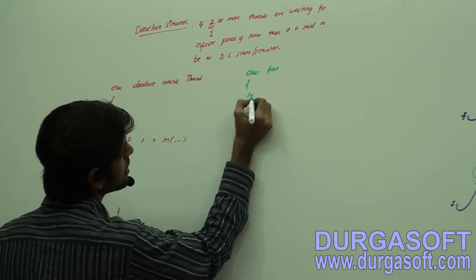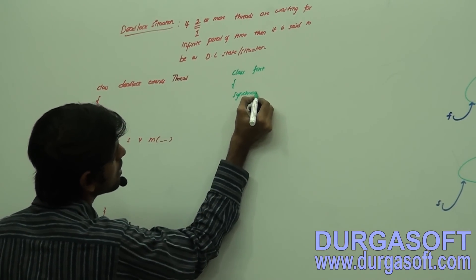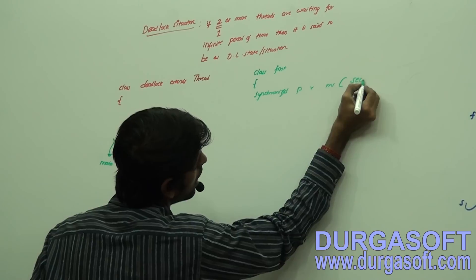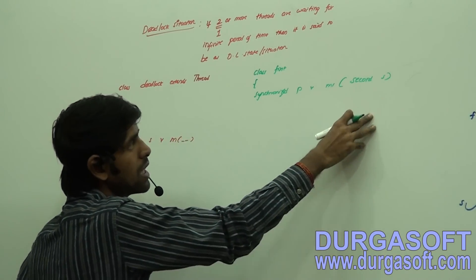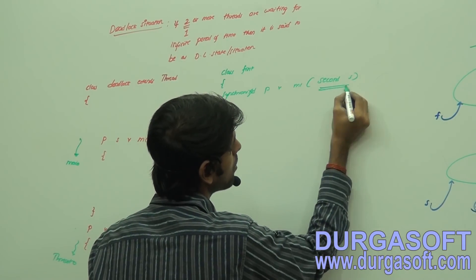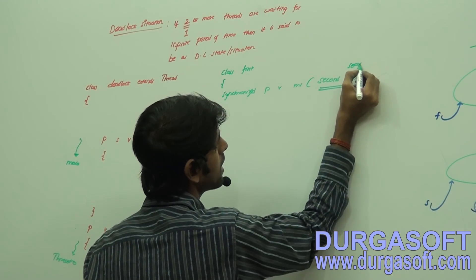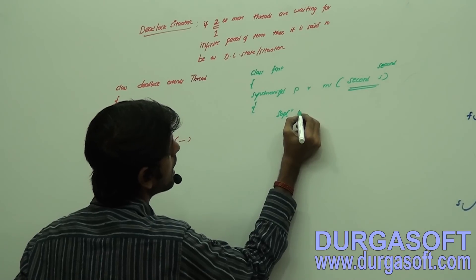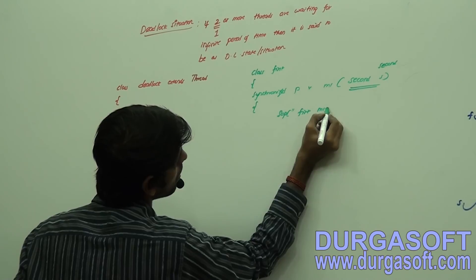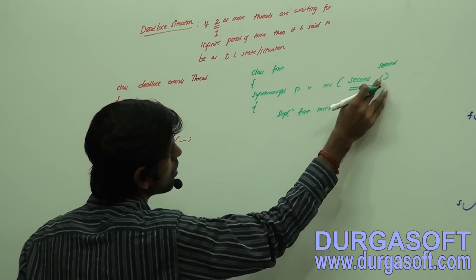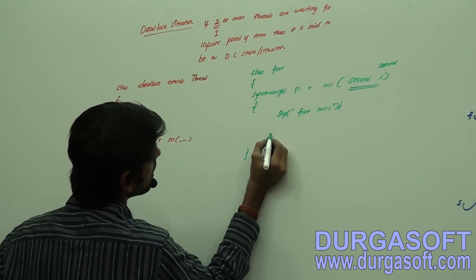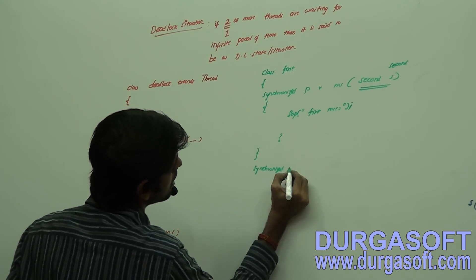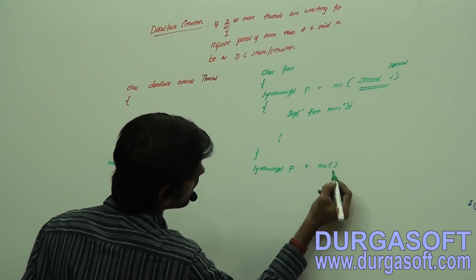Now class First has a synchronized instance method: synchronized public void m1, having an argument as 'second'. I am going to pass the second instance, so at runtime it will reference second. Let it be — I'll show that later. Print some statements to the console. Let m1 be any method, and after that I am going to call another synchronized method.